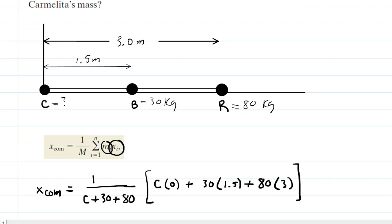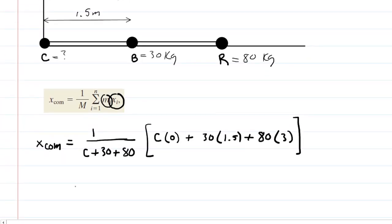Now we can simplify inside of the brackets. This first term here is zero, and then we have 45 plus 240, which is 285. So we're left with 285 over the mass of Carmelita plus the combined mass of the boat and Ricardo, 110.